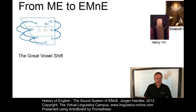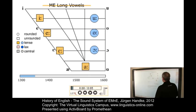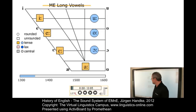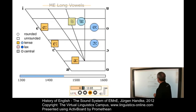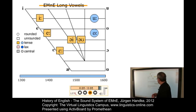Five of the seven Middle English monophthongs were raised and two of them were diphthongized. This simplified animation from the Virtual Linguistics Campus illustrates the changes that took place, starting in 1350. You can see this is a typical chain shift that raised five of the seven monophthongs and diphthongized two of them — the ones in the center.